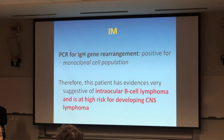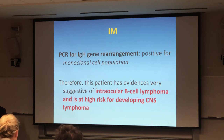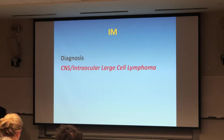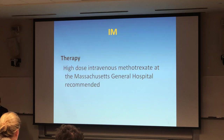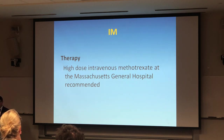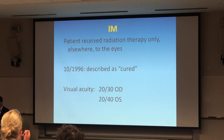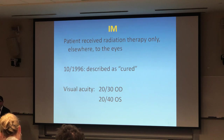By definition, at least in my career, whenever you have intraocular lymphoma, most likely the patient will develop CNS lymphoma. The intraocular lymphoma may be the first manifestation, but that's very significant — I have not seen a patient in my career who just stayed with the eye involvement. They mostly go on to the brain, so we have to act very aggressively.